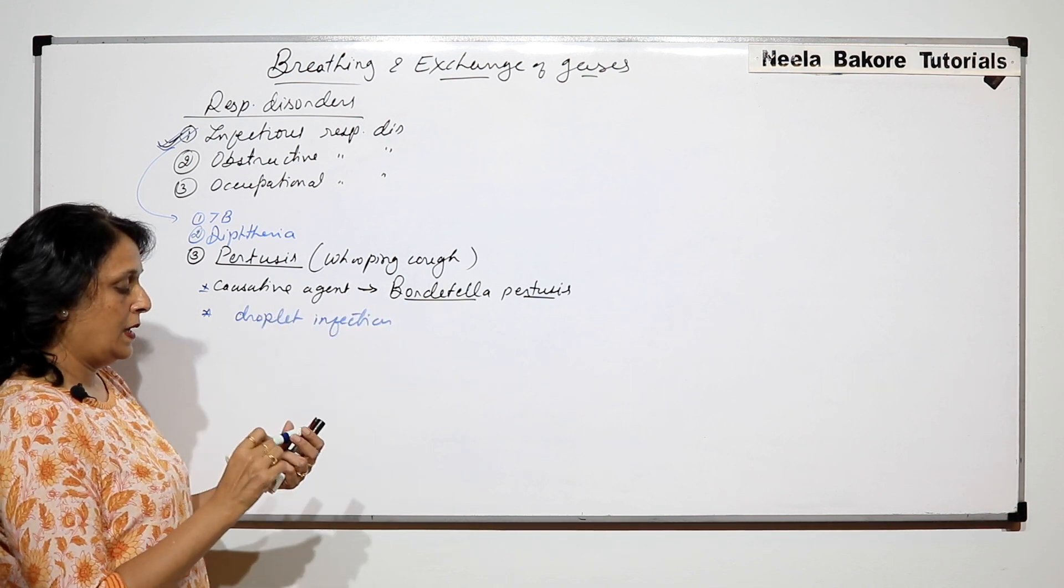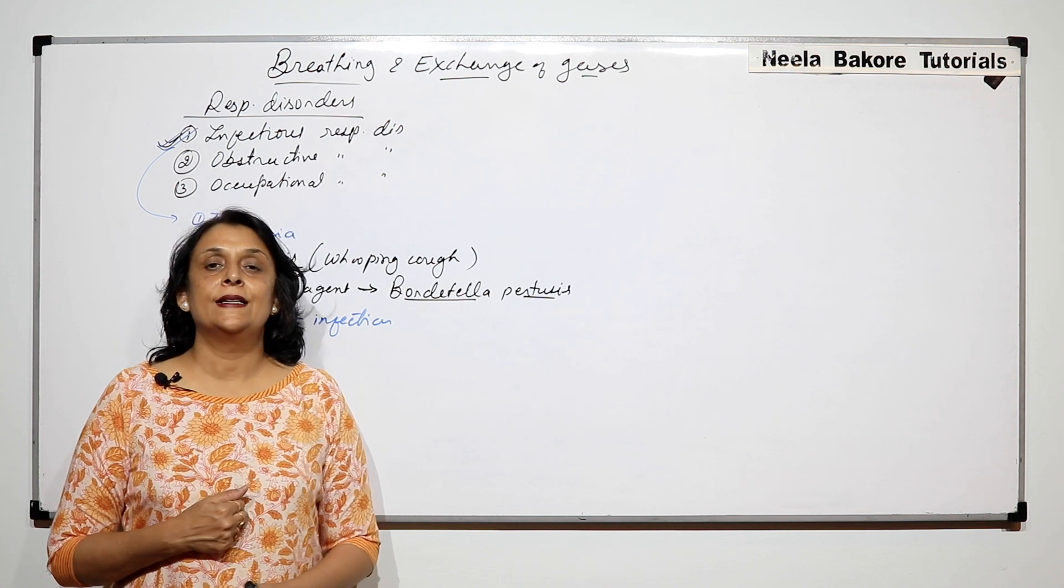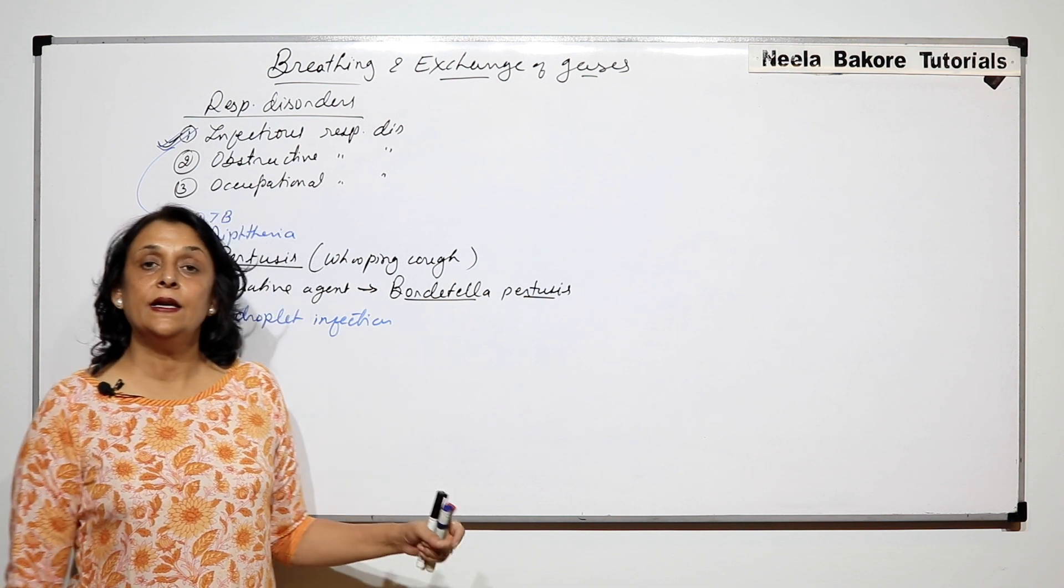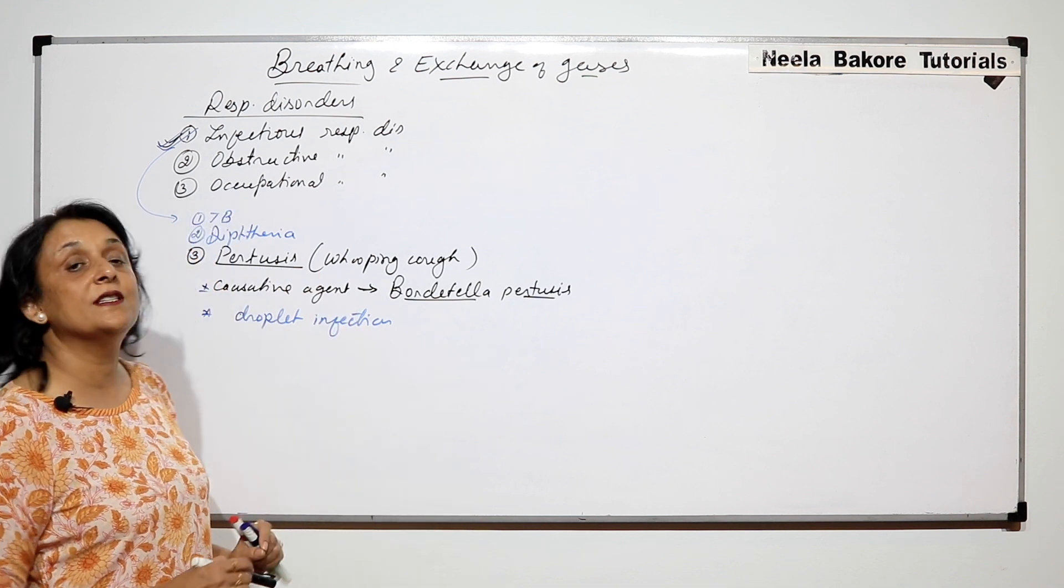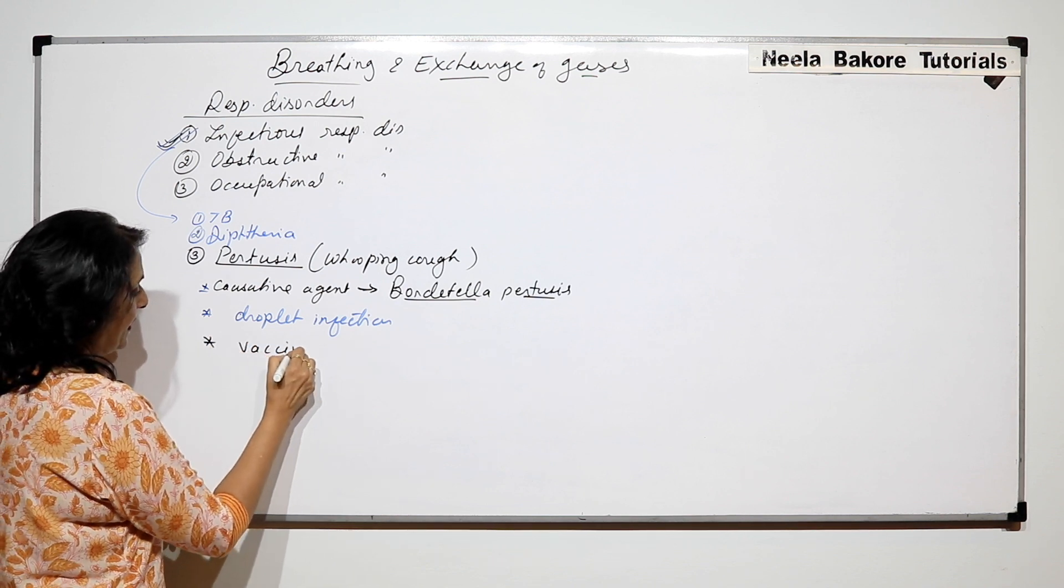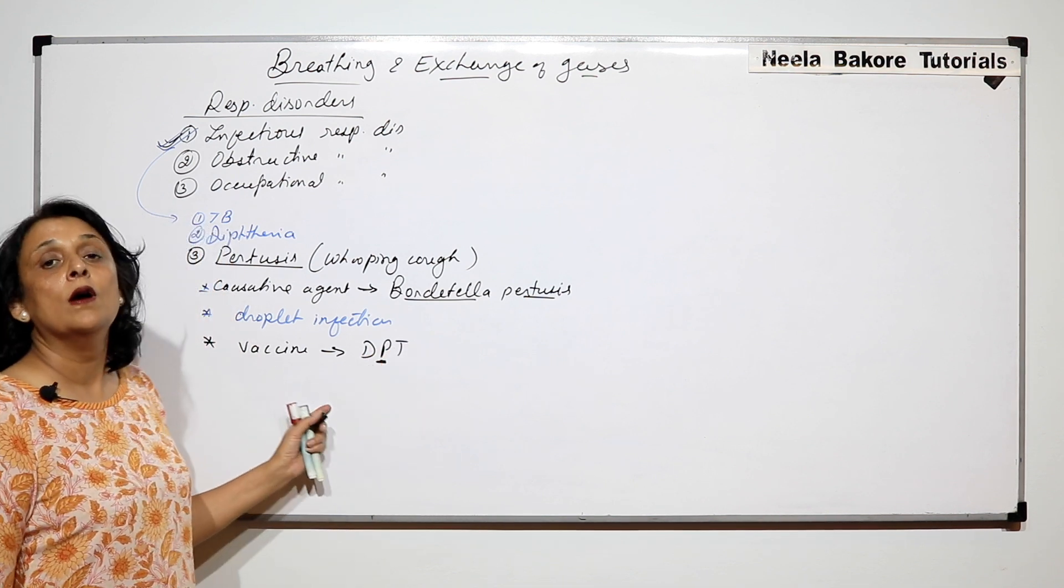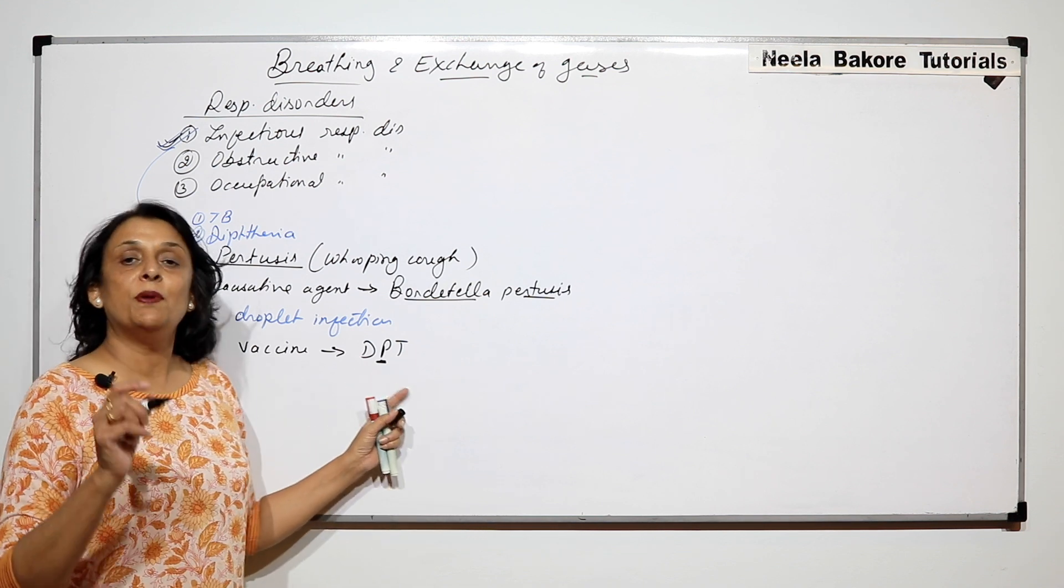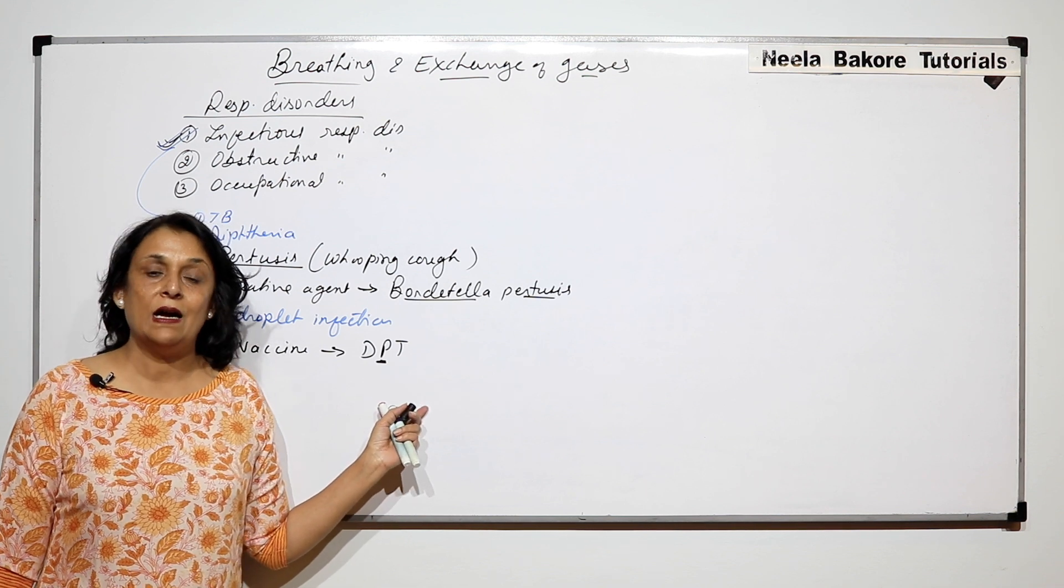If a person has this infection and is coughing or sneezing, then the droplets out of the mouth or nose can spread this infection. We have a vaccine for this - that is DPT. DPT: P is for pertussis, D is for diphtheria, and T is for tetanus. It's a triple antigen that immunizes against three diseases.